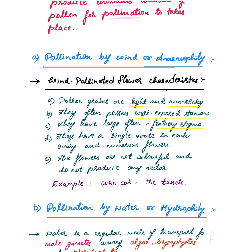If the pollen grains are heavy, they would be difficult to carry in the wind current. Second, wind pollinated flowers often possess well-exposed stamens. The reason they are well-exposed is so that the pollen can be easily dispersed into wind currents — that is why the stamen is exposed to the environment.